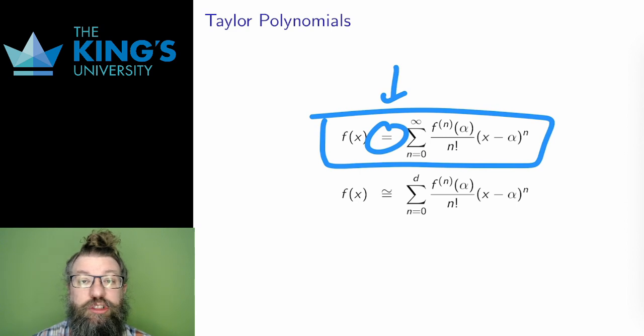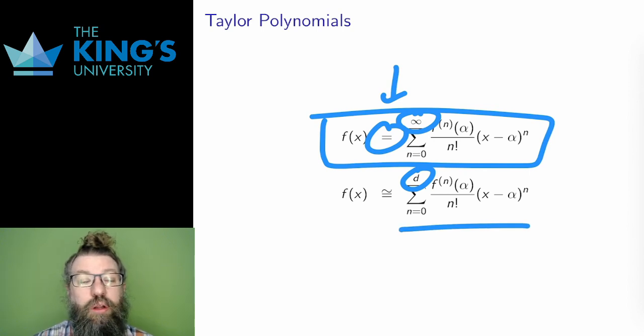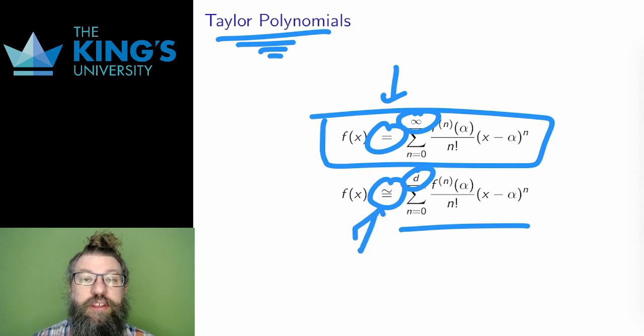However, I could truncate the Taylor series. Instead of going to infinity, I could stop at some number d. What I get then, instead of an infinite series, is just a polynomial of degree d. This is called the Taylor polynomial for the function. It is a polynomial that approximates the function, which I indicate with this version of the equal sign. This means approximately equal instead of exactly equal.